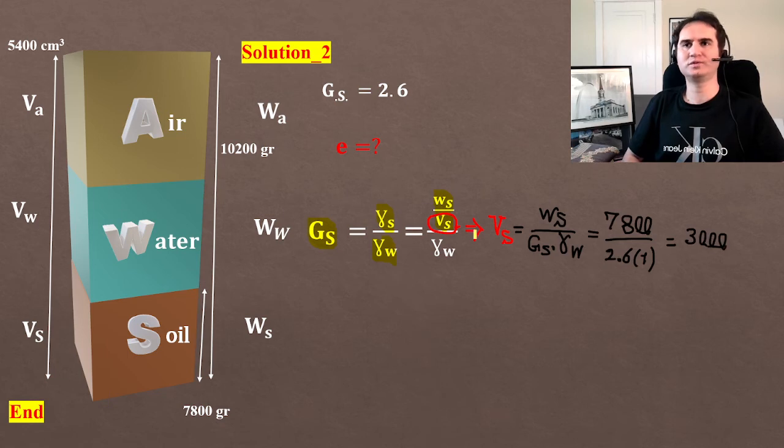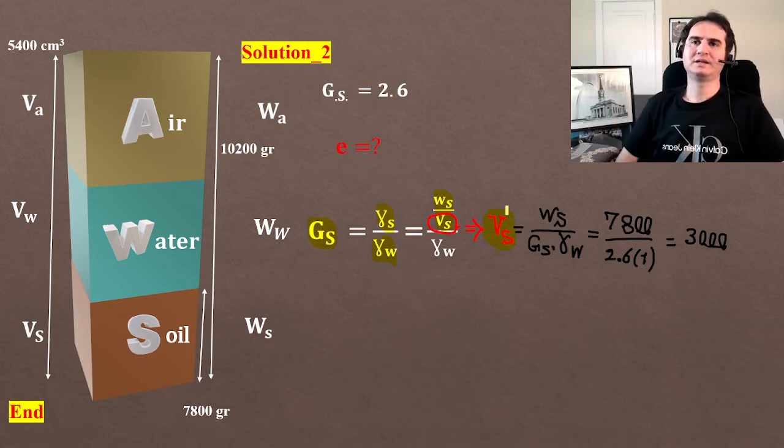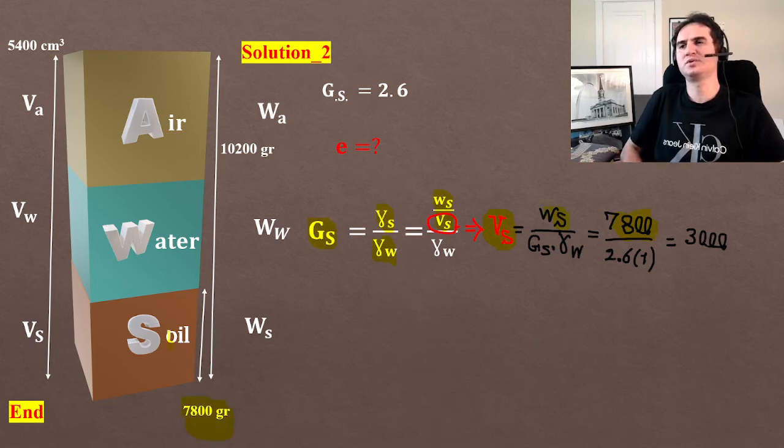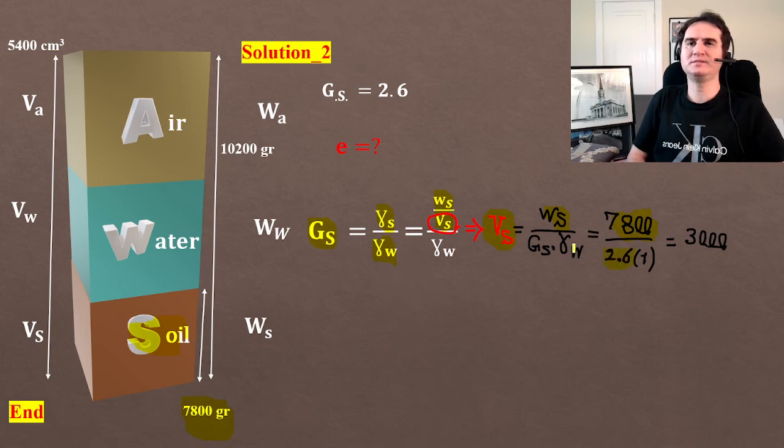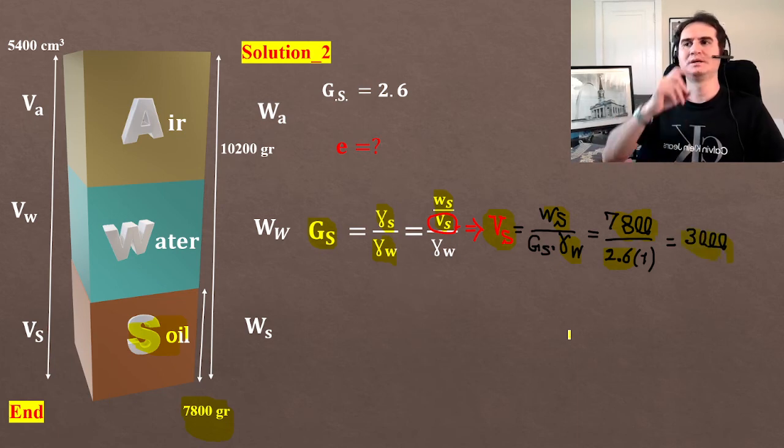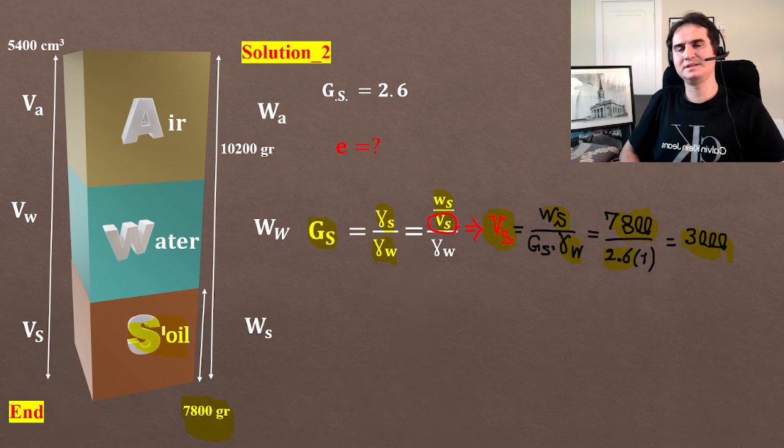If you rewrite the equation based on volume of soil, that gives you 7800 (weight of soil) over Gs times gamma W. Gamma W is 1 gram per cubic centimeter, which gives you volume of soil as 3000.